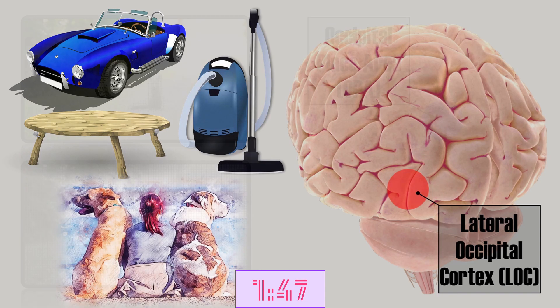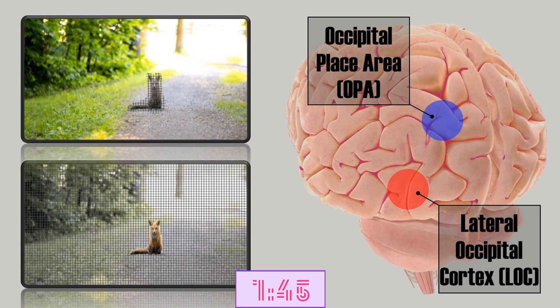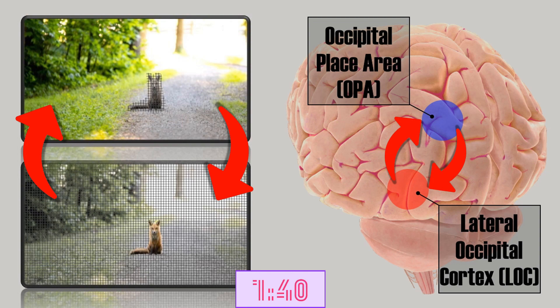Since our vision is heavily context-based, one would expect these regions to communicate. But when does this happen, and where is the information combined?